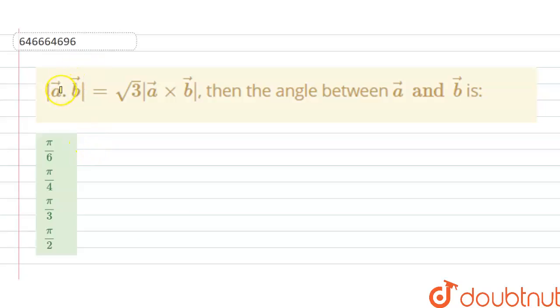Hello students, today our question is: magnitude of A dot B, that is the dot product of A vector and B vector, is equals to under root 3 times magnitude of A cross B vector. Then the angle between A vector and B vector is.